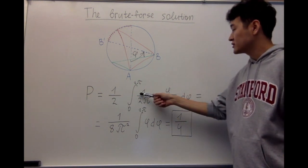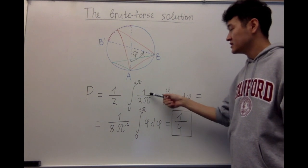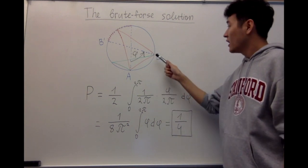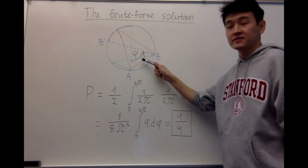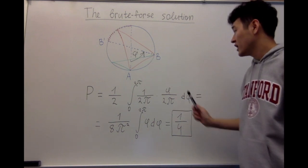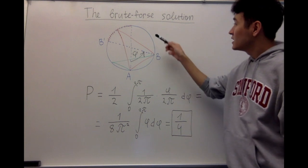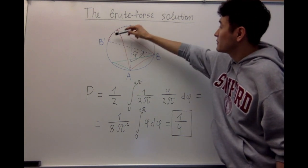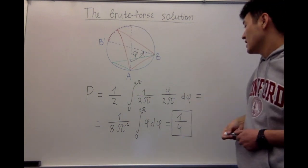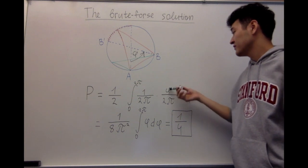We also have a factor of 1/(2π). This is the probability that our angle phi is exactly phi. And we have the probability that the third point lies in arc B'A', which is phi/(2π).